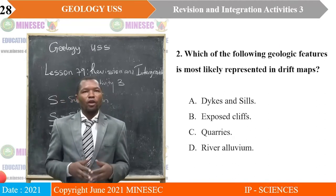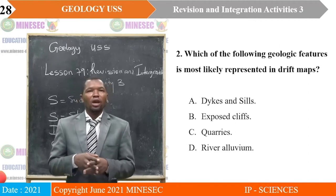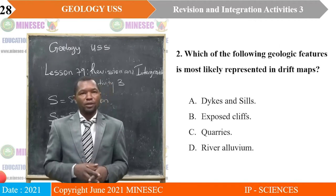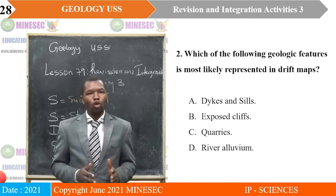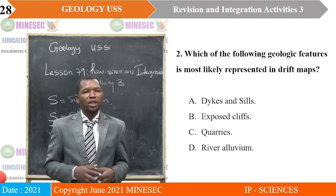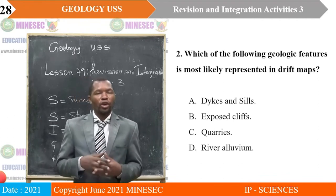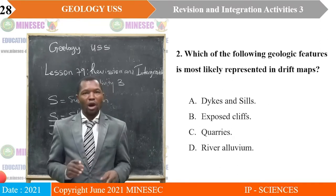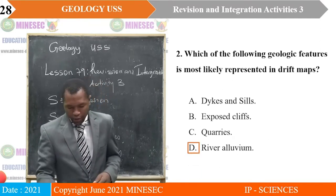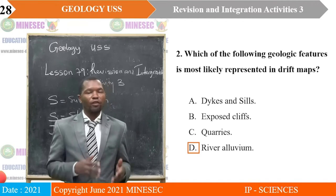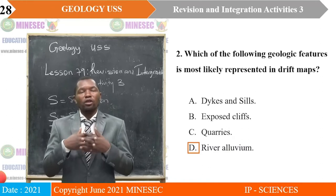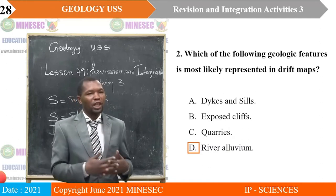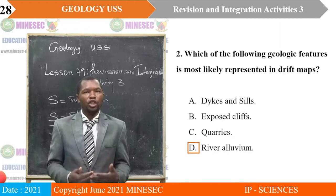Question two: Which of the following geologic features is most likely represented in drift maps? A — dikes and seals; B — exposed cliffs; C — quarries; D — river alluvium. Remember that we are talking about drift maps. The correct answer is D, river alluvium. River alluvium are loose materials, and when you have loose materials represented in a map, we call that map a drift map.